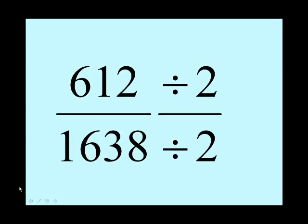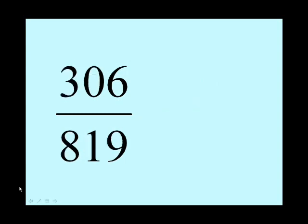So 612 divided by 2 is 306. 1638 divided by 2, well, 2 into 16 goes 8, 2 into 38 goes 19. So there we are. It's 306 over 819. Smaller numbers.